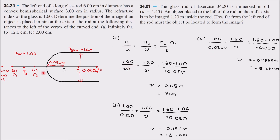In summary, varying the object distance changes where the image forms. When the object is far away, the image forms deep inside the glass rod. But as the object moves closer to the spherical surface, at some point the image shifts to form virtually outside the glass rod — quite an interesting result.